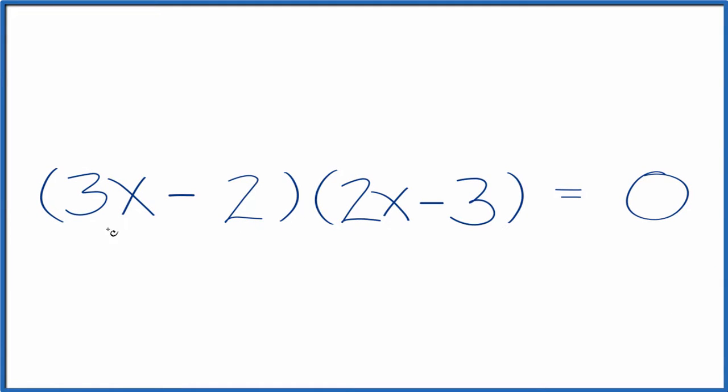Let's expand and simplify 3x minus 2 times 2x minus 3. You can use the FOIL method,